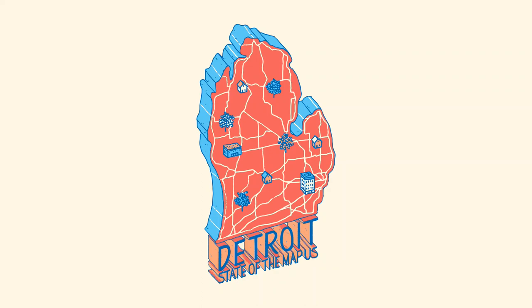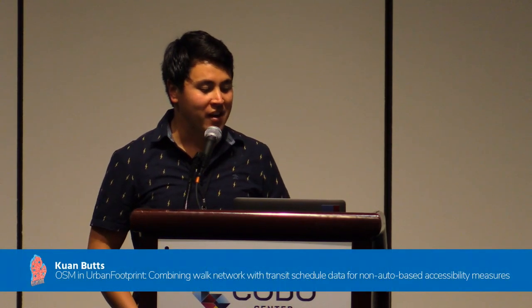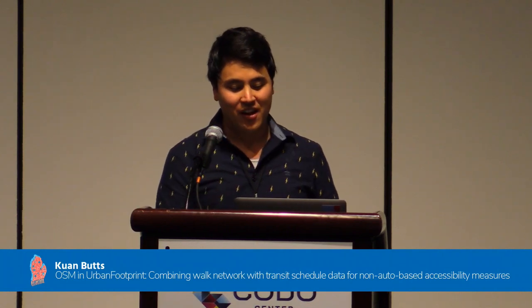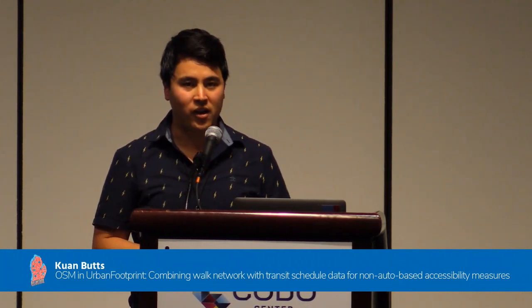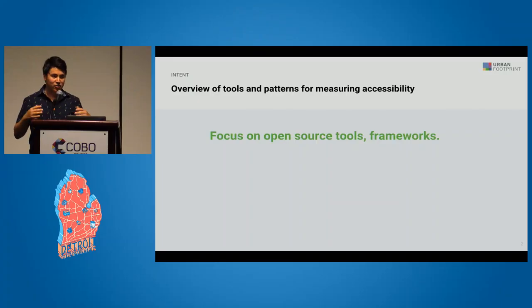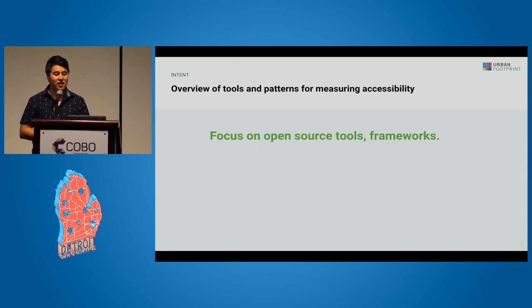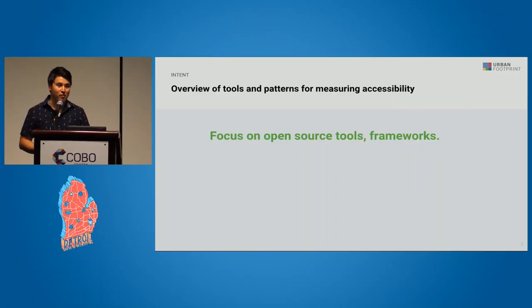Hello, thank you for waiting for me all day. I'm Quan, I work at Urban Footprint. The point of this presentation is to talk about how we compute walk and transit accessibility in Urban Footprint. I don't just want to talk about how we do it at Urban Footprint, but I want to give everybody here a set of open source tools and frameworks that are really quick and handy so you can do this on your own, or use Urban Footprint for the enhanced features.